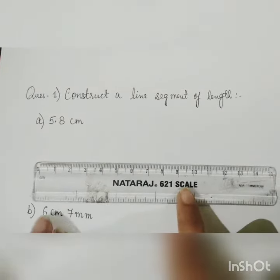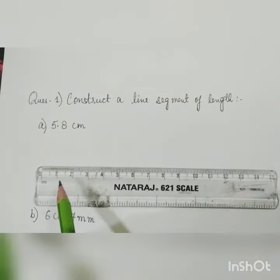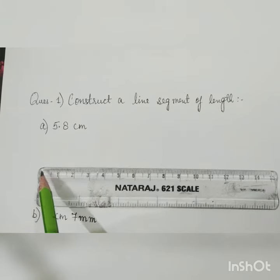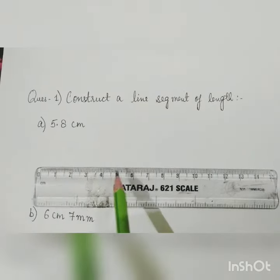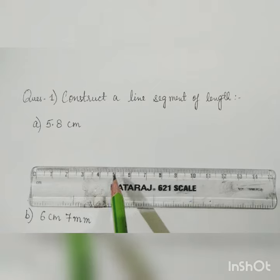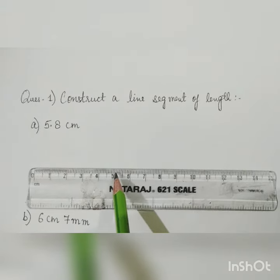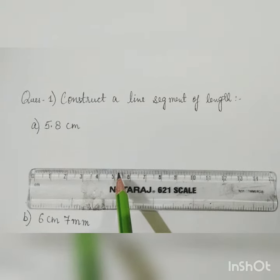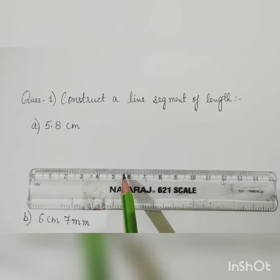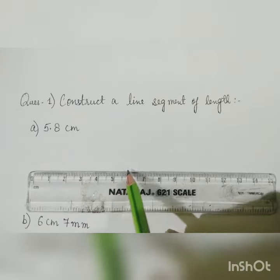See, this is your scale. What you have to do: you will start from 0, 0 to 5.8. See, this is 5 and count these 8 lines: 1, 2, 3, 4, 5, 6, 7, and 8. Put here a point.